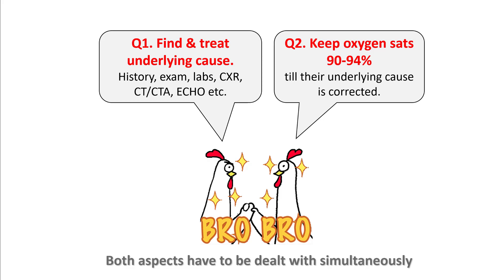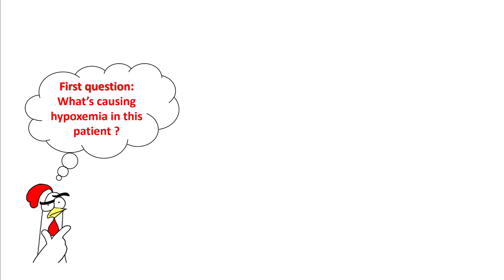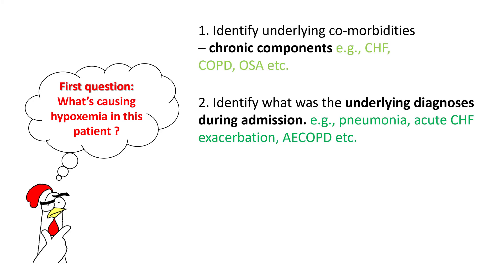In this video, we'll focus on the first question: finding the underlying cause. The first question you should ask is what's causing hypoxemia in this patient? To know this, identify the underlying comorbidities — especially looking at the chronic component first.